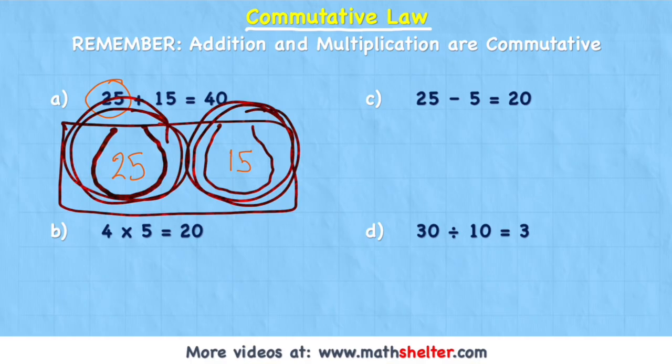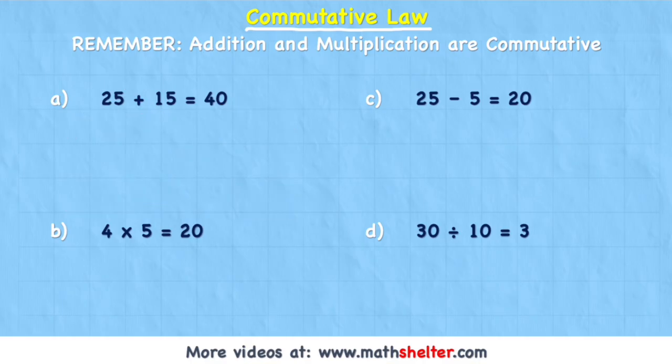They're all going into the collective pot. So as I say, 25 plus 15 is the same as saying 15 plus 25. I'm still going to get 40.